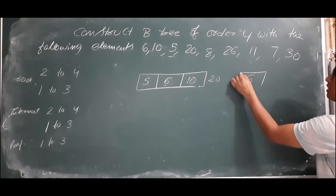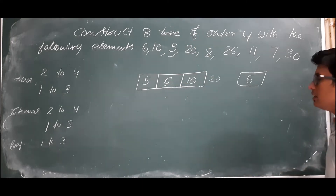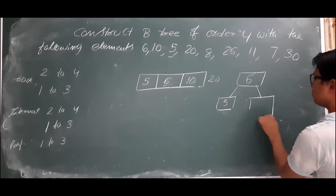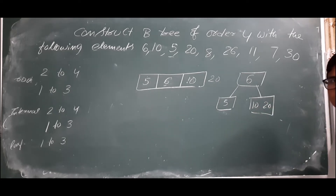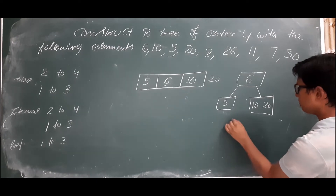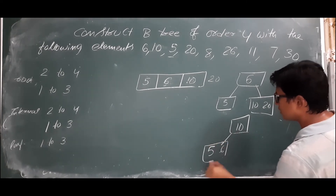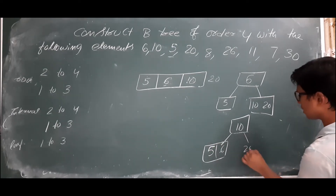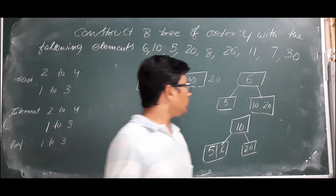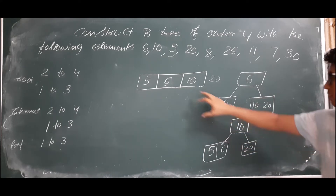When we identify the median, we promote it to the parent node. For example, if we take 6 as the median, then 5 goes to the left subtree and 10, 20 go to the right subtree. Alternatively, if we take 10 as the median, then 5 and 6 go to the left subtree and 20 goes to the right subtree. These two choices produce two different B-trees.